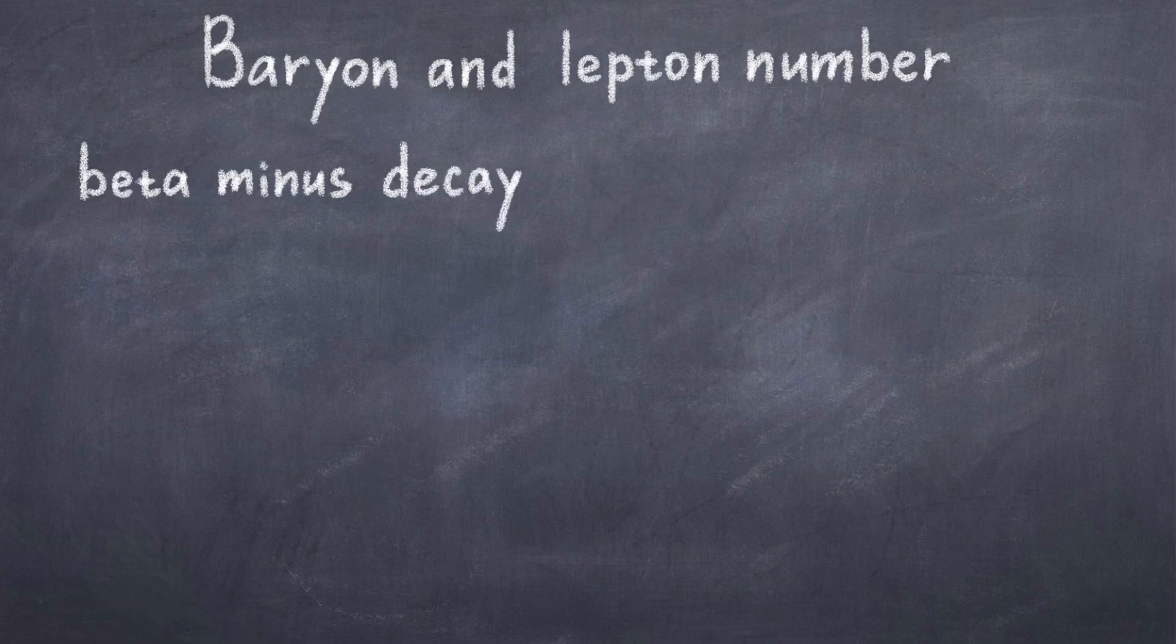An example of baryon number conservation is the beta minus decay. In this case you start with a neutron, which is made from two down and one up quark, and therefore you have a baryon number of three.